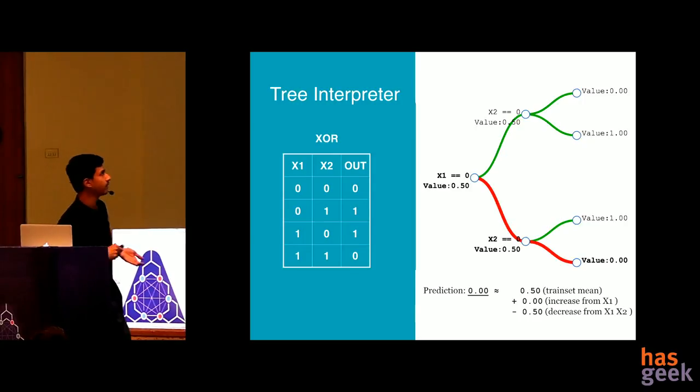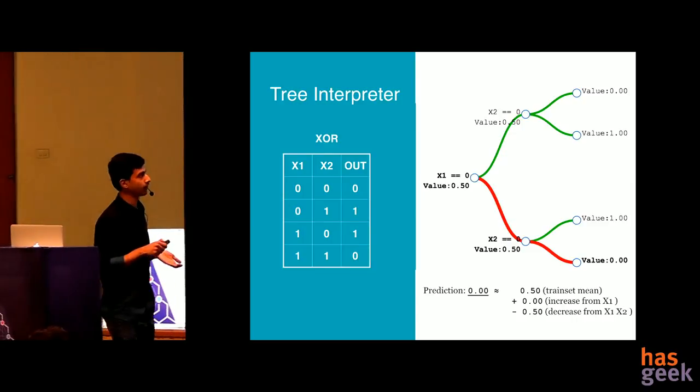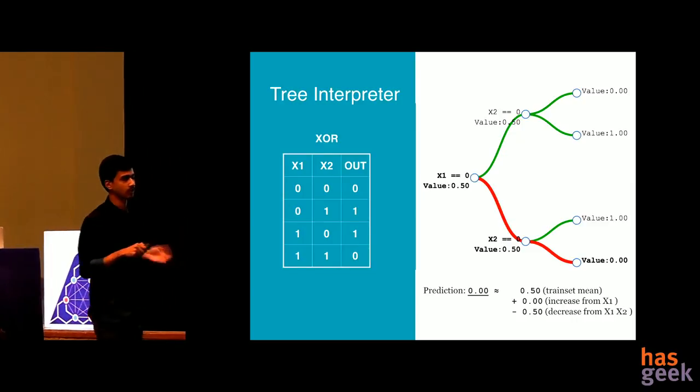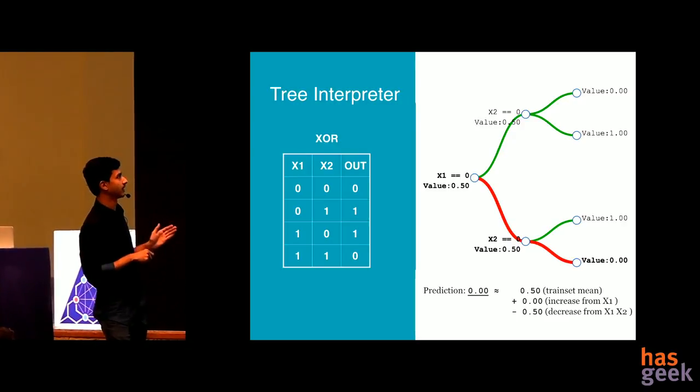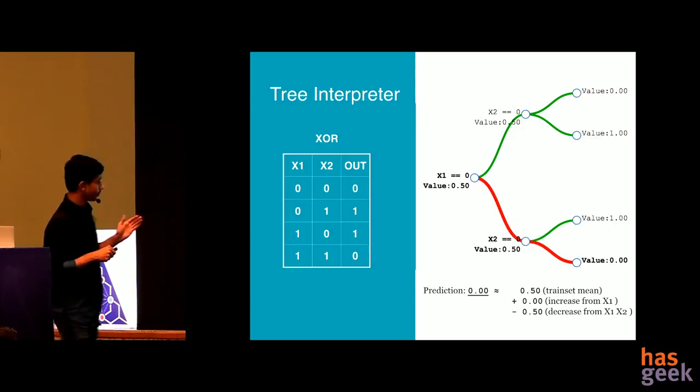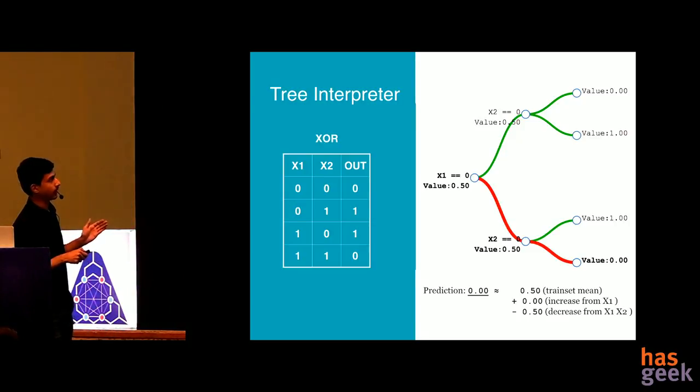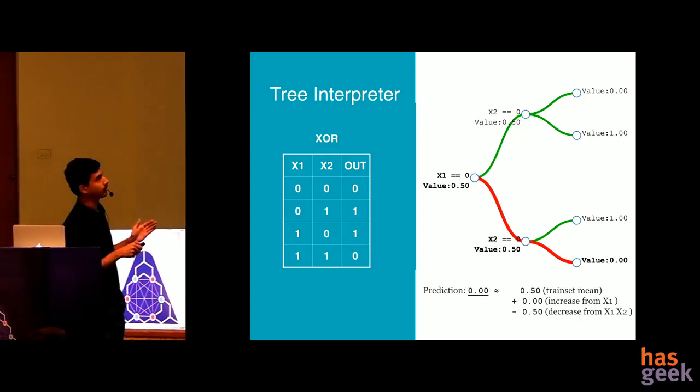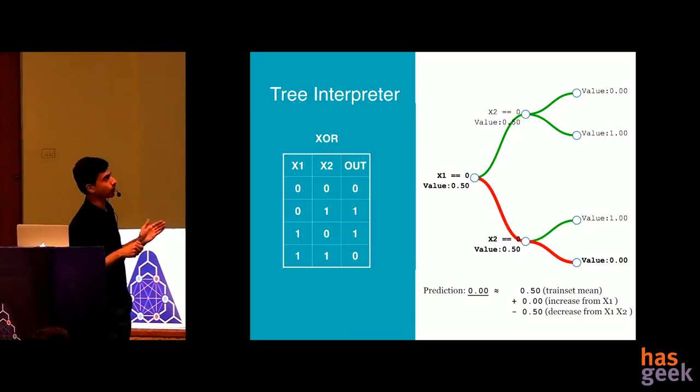For an example, see the XOR gate, exclusive OR gate where you have this truth table. We're training a decision tree, a basic simple decision tree to model this particular data. This is the condition at the base node. If X1 equals zero, if it is true it goes up. True always goes up, false goes down. We will take this last example where both are one but the output should be zero.